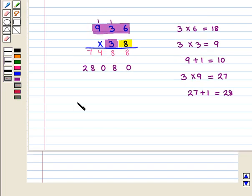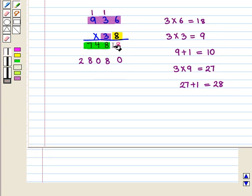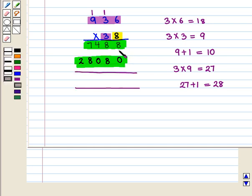Now we add these two numbers. At units place we get 8 plus 0, that is 8. At tens place we get 8 plus 8, that is 16.